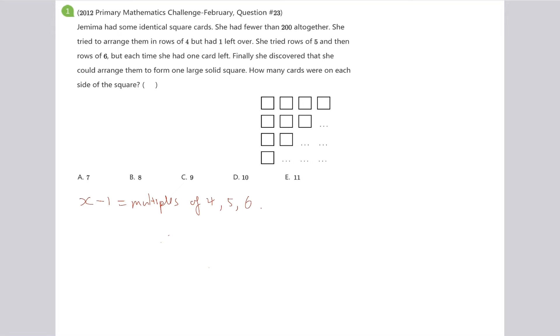Therefore, let's see all the multiples of 4, 5 and 6 that is less than 200. First of all, let's find the LCM of 4, 5 and 6. And that is just going to be 60.